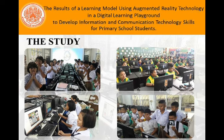Step four was studying results from using the system, comprising: 4.1, learning achievement for the information and communication technology subject for primary school students years 1 to 6; 4.2, results from assessment of information and communication technology skills for primary school students years 1 to 6; and 4.3, opinions of students towards using the system. Step five was the evaluation to support the learning model using augmented reality technology in a digital learning playground to develop information and communication technology skills for primary students.